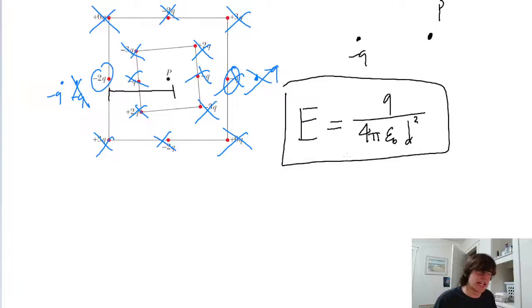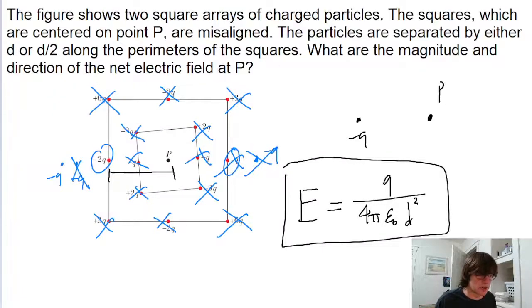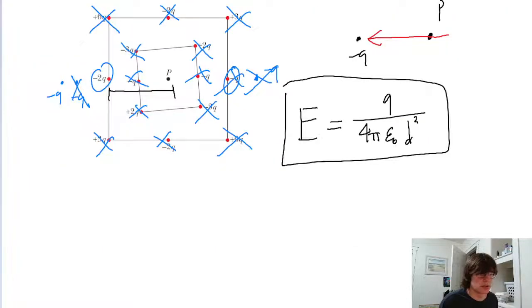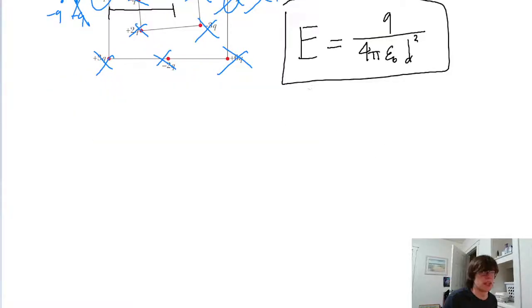Though the problem does ask for the direction as well. And that is important to know. Because since the charge is negative, remember, electric field lines end at negative charges. So from the perspective of point p, there should actually be an electric field pointing leftward through point p, terminating at the charge. So this is the magnitude. This formula I've written is the magnitude of the field. And it's directed leftward.